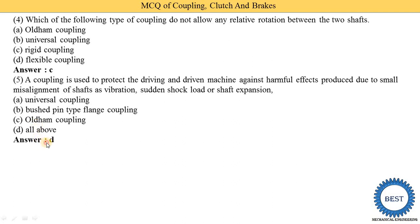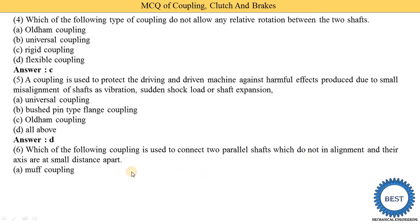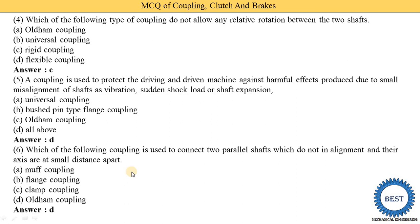Which of the following couplings is used to connect two parallel shafts that are not in alignment — where axes are a small distance apart, meaning the two shafts share the same axis but there is some offset between them? In that case, we use the Oldham coupling. The correct answer is option D — Oldham coupling.